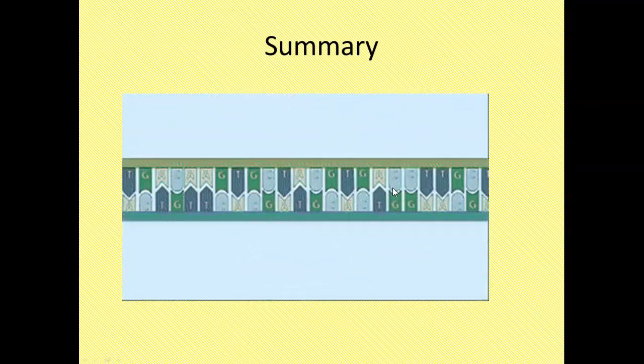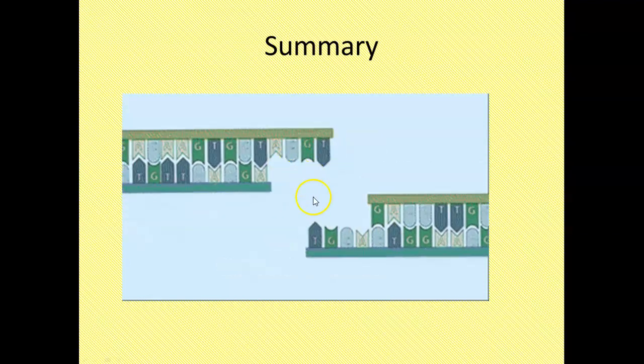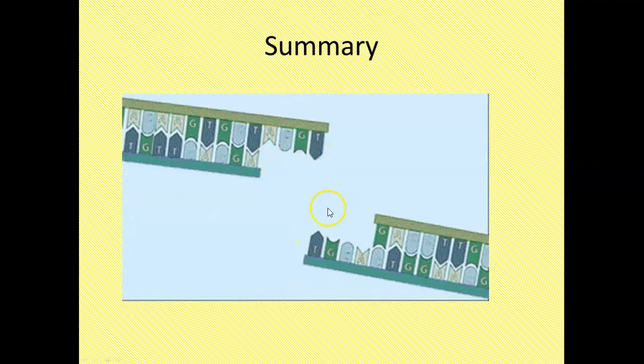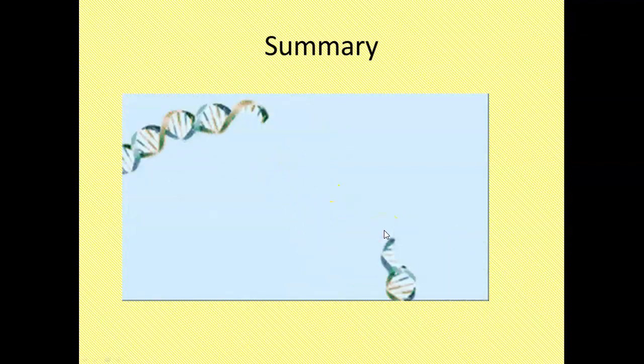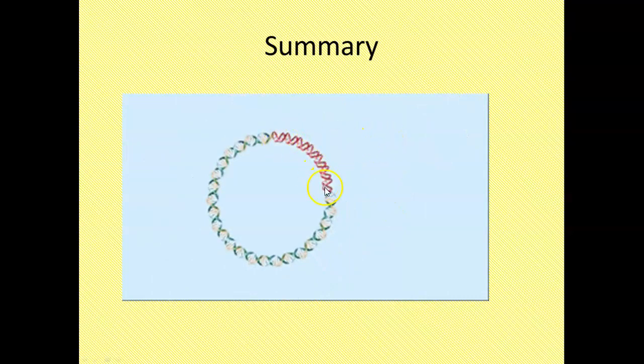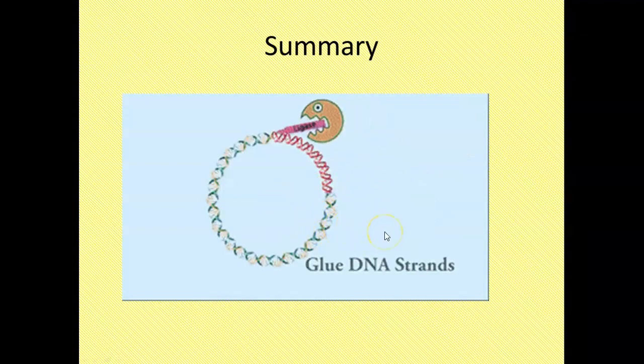Here comes our restriction enzymes. They don't actually look like that. But they chop the sequence, and see those sticky ends now? These guys are going to want to attach to something. And what they'll end up attaching to is this, which has the same sticky ends. And then to connect it all together, we use DNA ligase, which actually doesn't have a tube of glue on it, by the way.